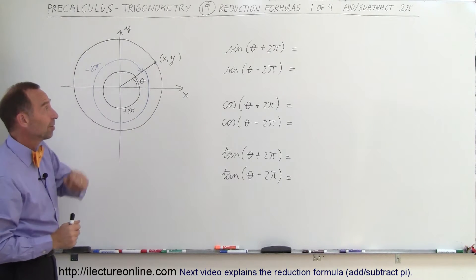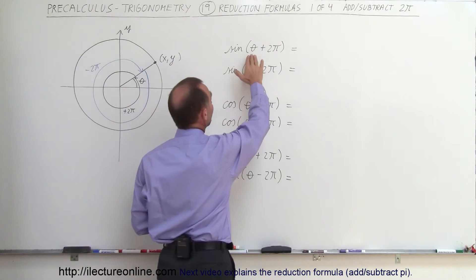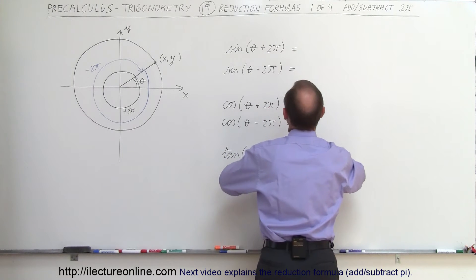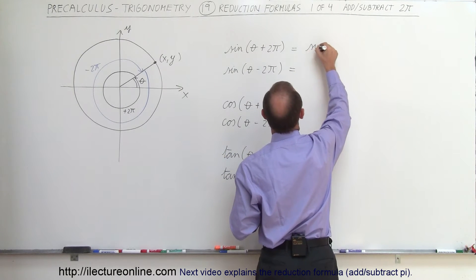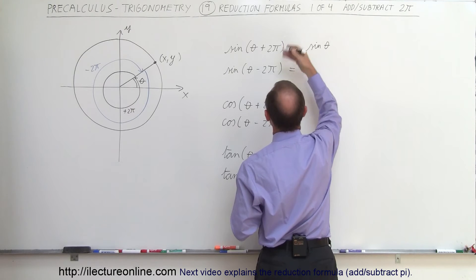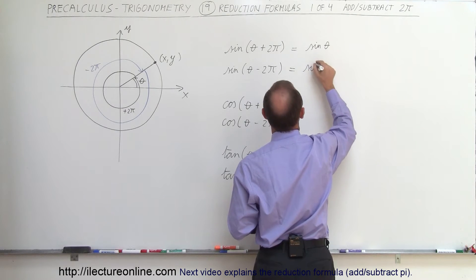Because of that, I can simply say that whenever I have the sine of theta plus 2π, I can simply subtract or add 2π to that, and that's the same as the sine of theta. Either subtracting or adding doesn't make any difference; I get the sine of theta.